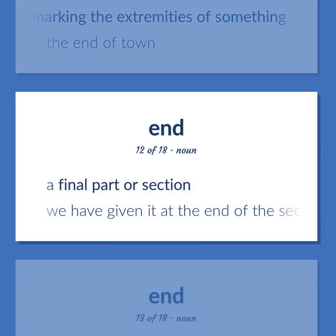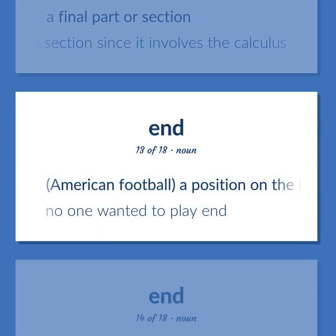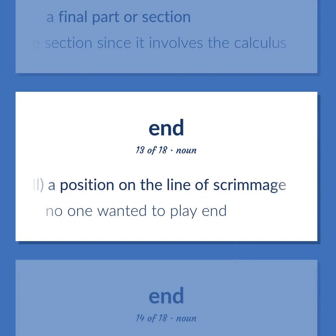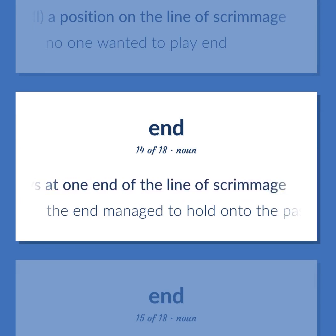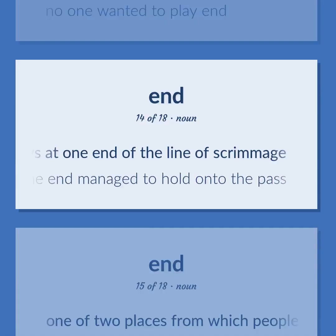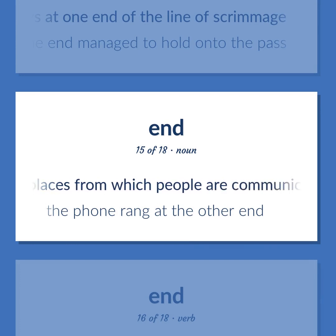A final part or section: we have given it at the end of the section since it involves the calculus. American football: a position on the line of scrimmage — no one wanted to play end. The person who plays at one end of the line of scrimmage — the end managed to hold onto the pass. One of two places from which people are communicating — the phone rang at the other end.